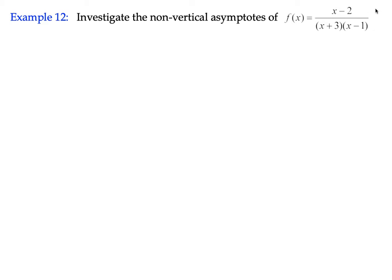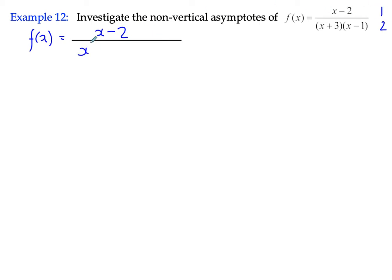By considering that the order of the numerator is one and the order of the denominator is two, we can predict that there's going to be a horizontal asymptote on the x-axis, but we can prove that. So let's have a look at the function. f of x is equal to x minus 2 all over... I'll multiply that bracket out: x squared minus x, plus 3x is plus 2x, and then 3 times negative 1 is negative 3. So there's my quadratic function in the denominator.